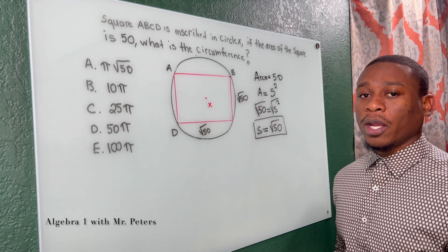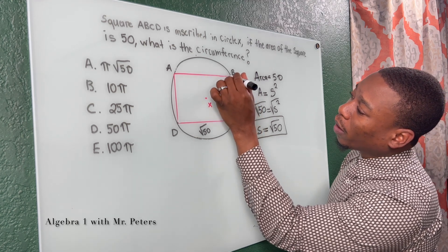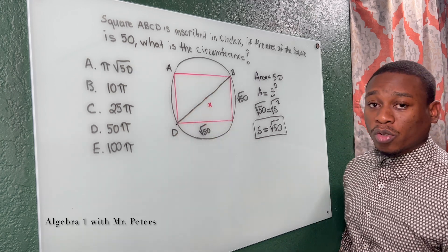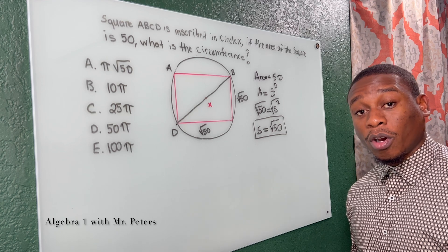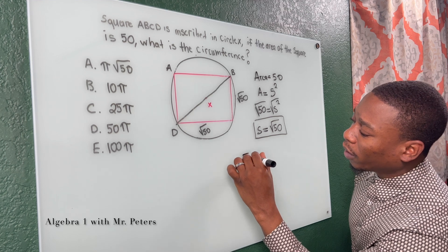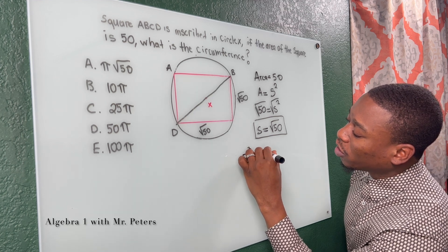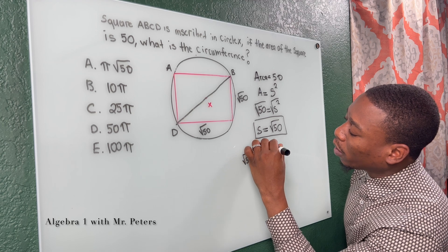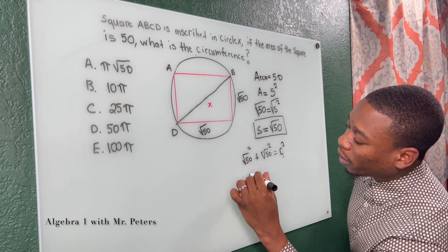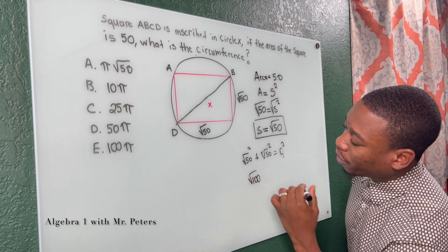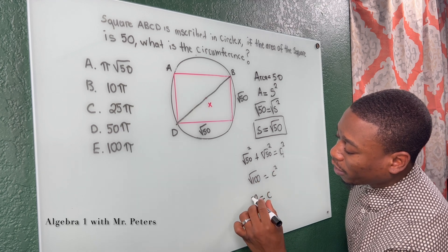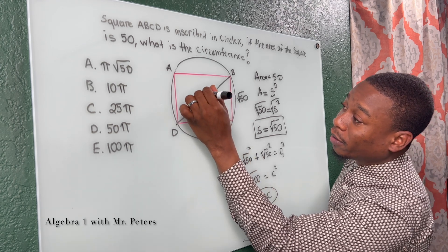We're going to create a triangle. This diagonal of the square also represents the diameter of the circle, and we could find this two ways. We could use the Pythagorean theorem: radical 50 squared plus radical 50 squared equals c squared. So we get radical 100 equals c squared, and we know that 10 equals c.